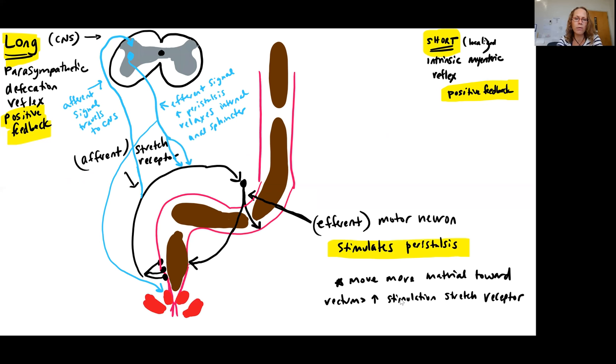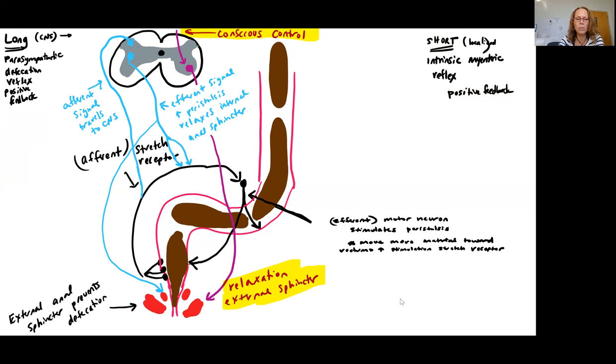So now we have material continuing to move down and more material moving into that rectum and that internal anal sphincter is relaxed. So that makes that open. The external anal sphincter is still contracted. So this is still closed. This is preventing defecation from occurring. We have to remember that conscious level control over the external anal sphincter.